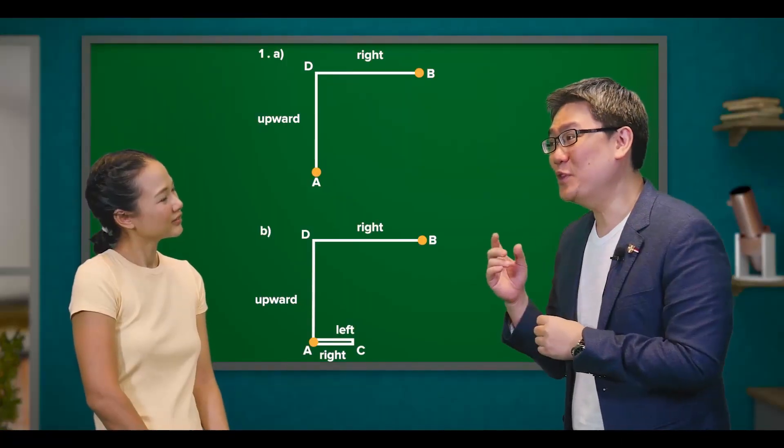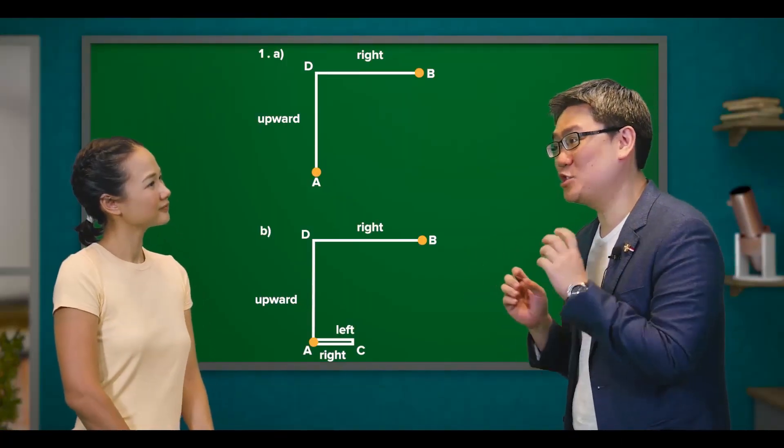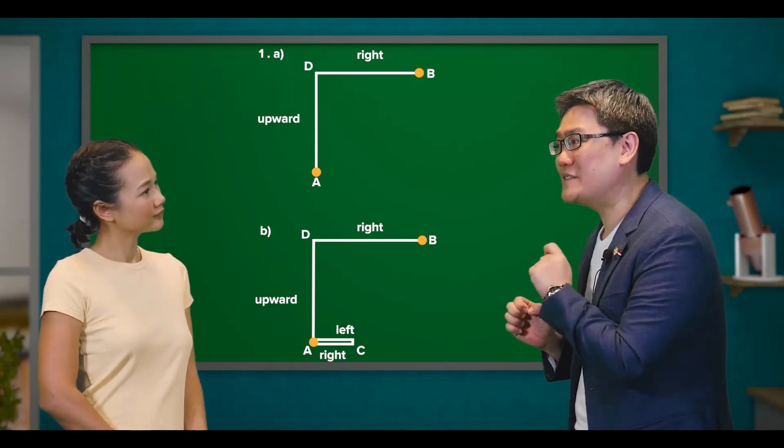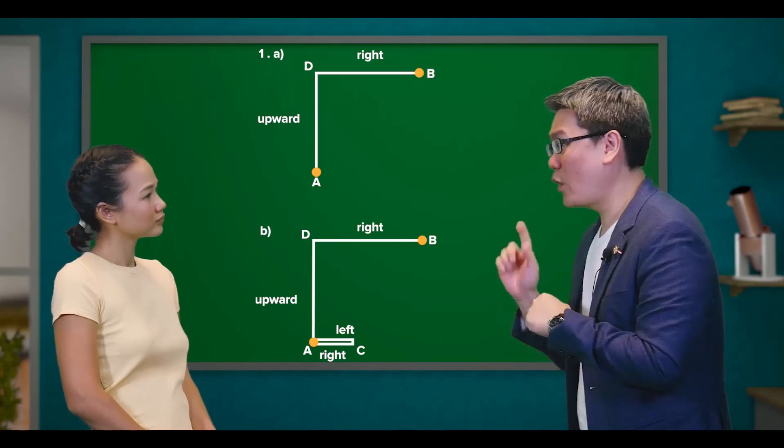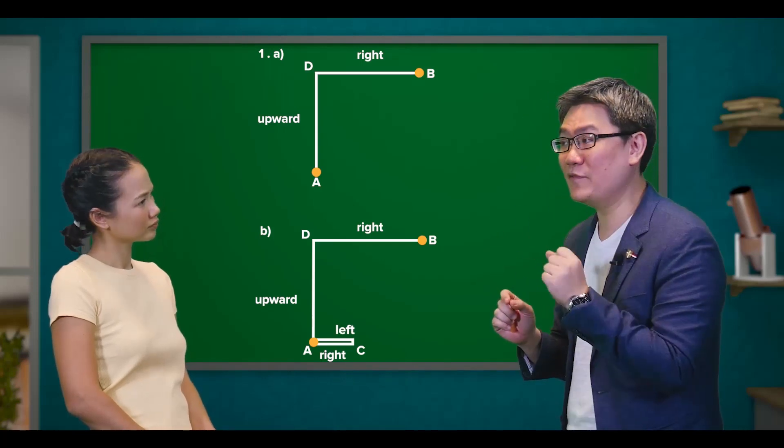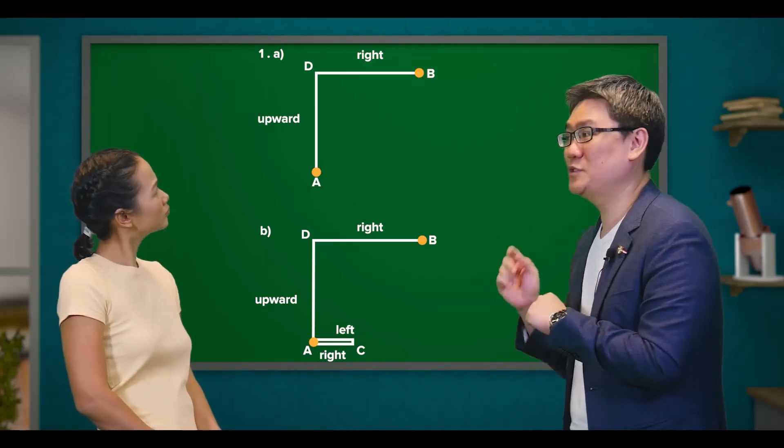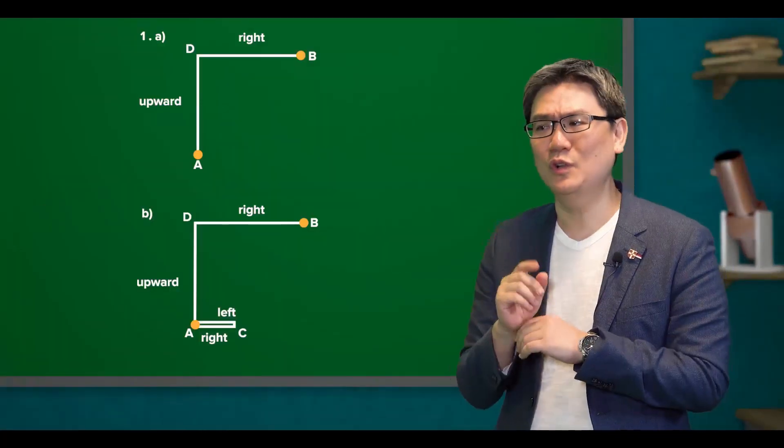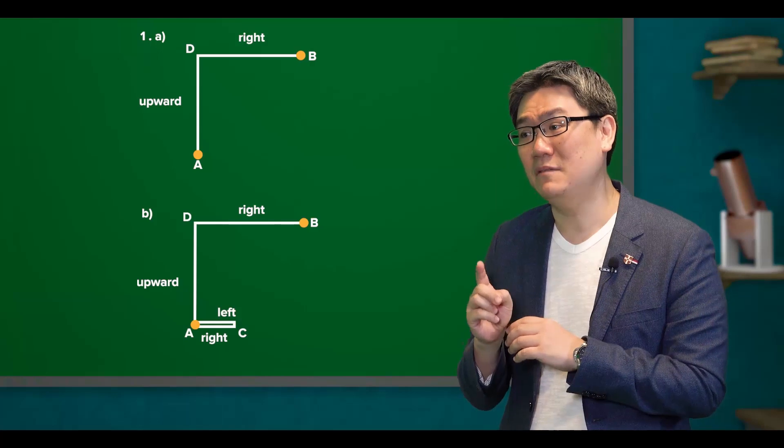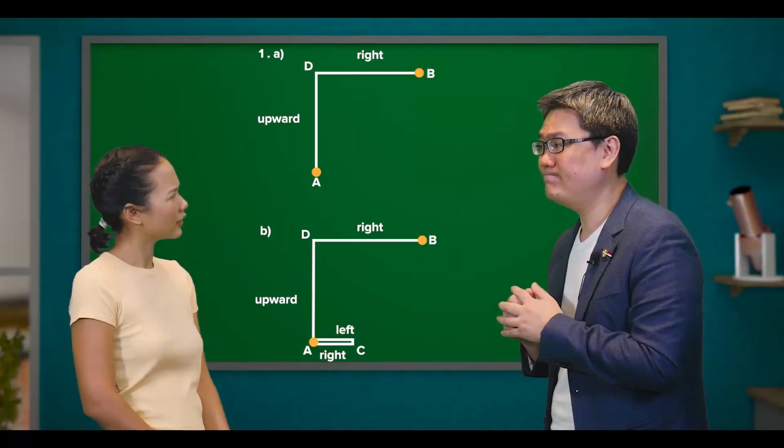Right. So you would notice that for the total distance travelled, there was no fixed direction of travel from the bus stop to the school. One moment it was to the left, and the next moment it was to the right, and then it was upwards. So no specific direction may be stated.